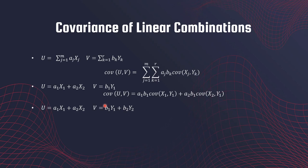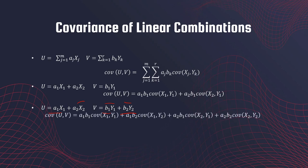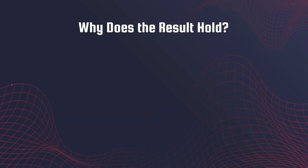Now if we have r = 2 instead, we follow the same approach: we look at x₁ and y₁, then x₁ and y₂, then x₂ and y₁, and finally x₂ and y₂. So we're looking at each pair of variables.